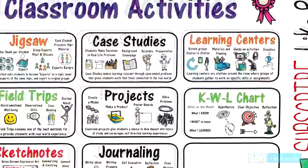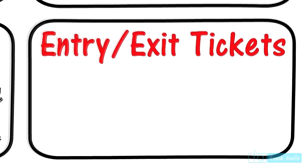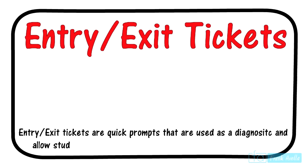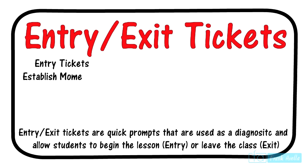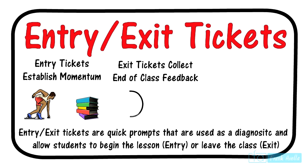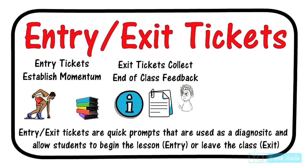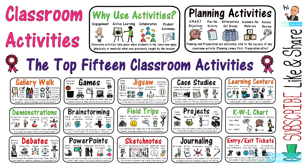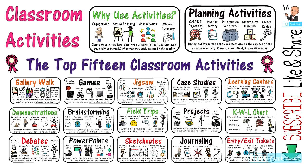Last but not least is the entry/exit ticket. Entry and exit tickets are quick prompts used as diagnostics that allow students to begin the lesson — to enter — or to leave the classroom — to exit. An entry ticket establishes learning momentum for the classroom: it gets students working and writing, making them more likely to continue in that direction. Exit tickets, which come at the end of class, are a good way to collect feedback on what students have actually learned. Students write responses to questions on little slips of paper and are often asked to summarize. The prompt questions should focus on the key topic of the lesson and require students to demonstrate mastery of understanding on a daily lesson objective — for example, what was the Colosseum and what was it used for?